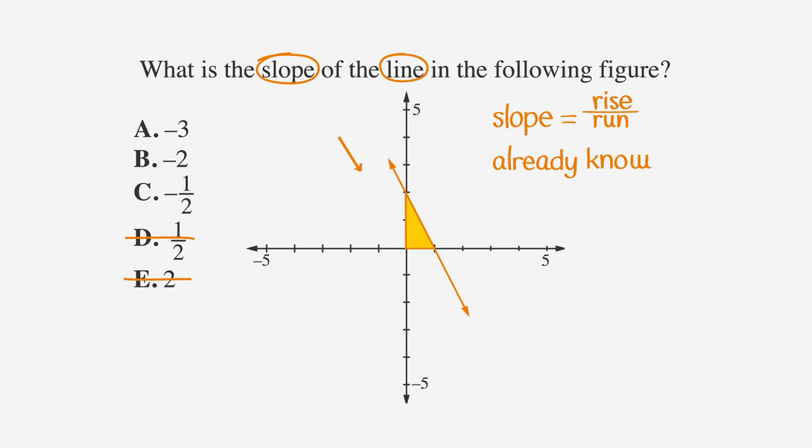We already know that the slope is negative, so we can add that. The rise, which is the vertical line in our triangle, is 2, so plug that into the formula. The run, or the horizontal line in our triangle, is 1, so go ahead and plug that in. The answer is negative 2 over 1, which simplifies to negative 2. This is choice B. Nice!